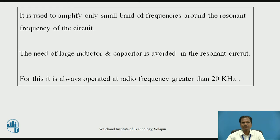A Class C power amplifier is used to amplify only a small band of frequencies around the resonant frequency of the circuit. The need for large inductors and capacitors is avoided in the resonant circuit. The resonance frequency of the resonant circuit depends upon the values of inductor and capacitor — as frequency increases, the size and value of inductor and capacitor decreases. Therefore, a Class C power amplifier that amplifies a small band of frequency around the resonant frequency is always operated at radio frequencies greater than 20 kHz.